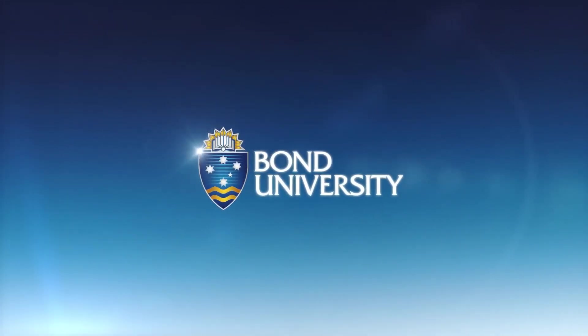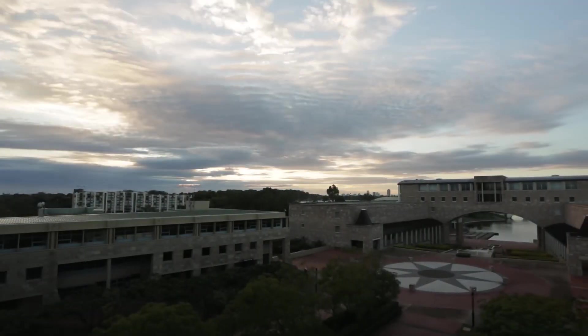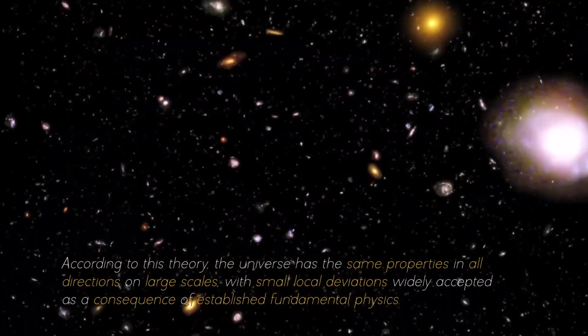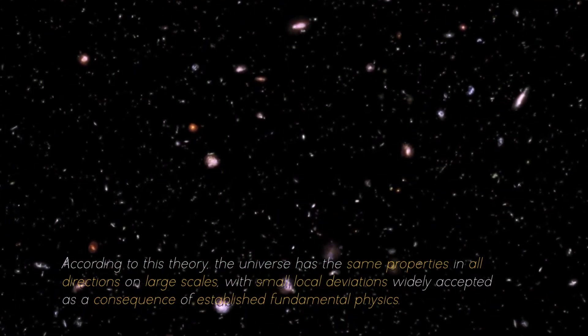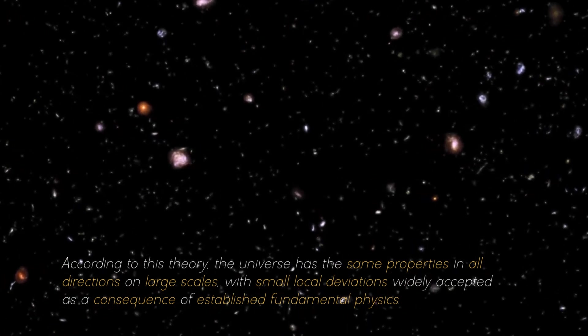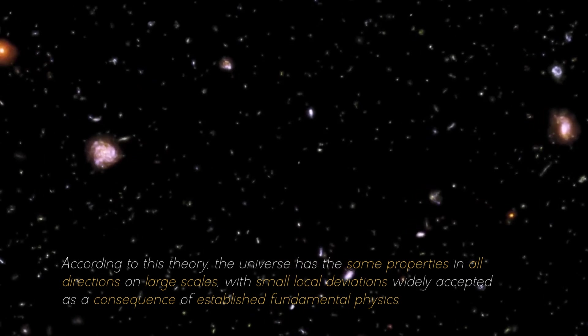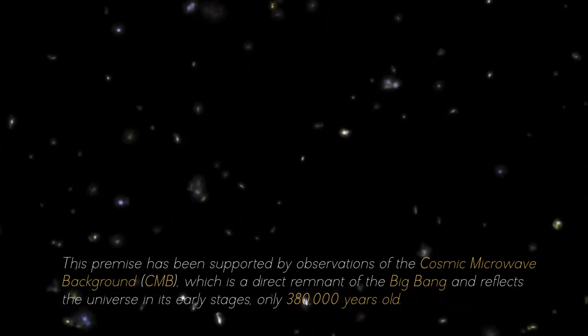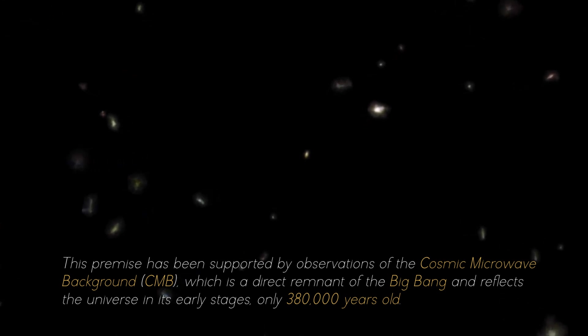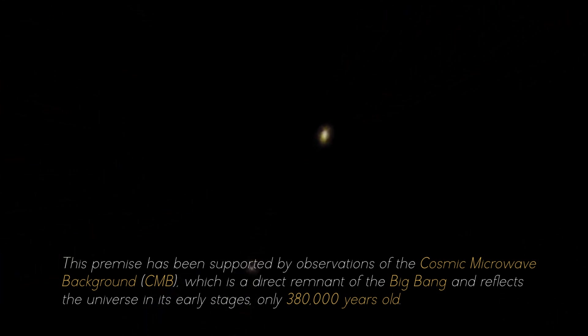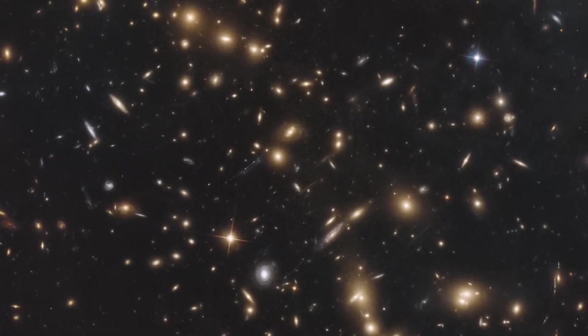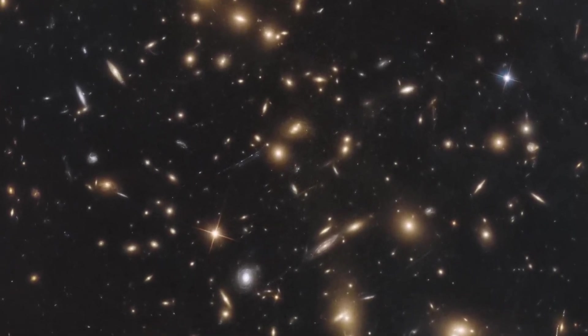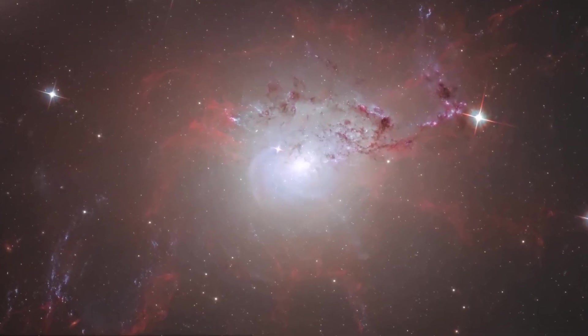A PhD researcher in astronomy and astrophysics at Bonn University, together with his supervisor, set out to investigate the theory of isotropy. According to this theory, the universe has the same properties in all directions on large scales, with small deviations widely accepted as a consequence of established fundamental physics. This premise has been supported by observations of the Cosmic Microwave Background, which is a direct remnant of the Big Bang and reflects the universe in its early stages, only 380,000 years old. The uniform distribution of the CMB across the sky implies that the universe expanded rapidly and uniformly in all directions in those early times.